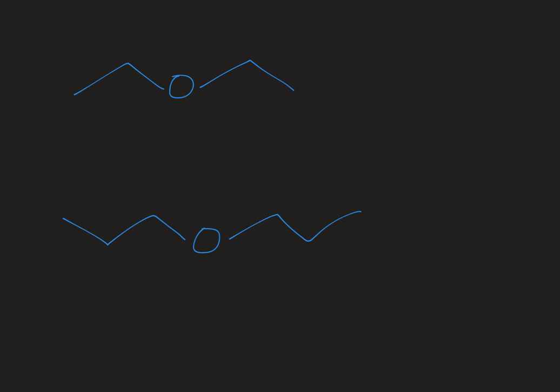Lastly, if you have a symmetrical ether, so the alkyl group on either side is the same, we just put one alkyl group name out in front, and then we know that the same alkyl group is on either side—we know it's symmetrical. So this top one would be called ethyl ether, and this bottom molecule here would be called propyl ether.